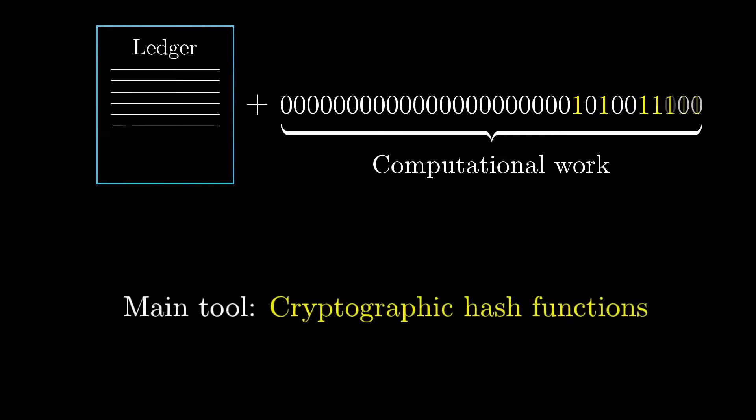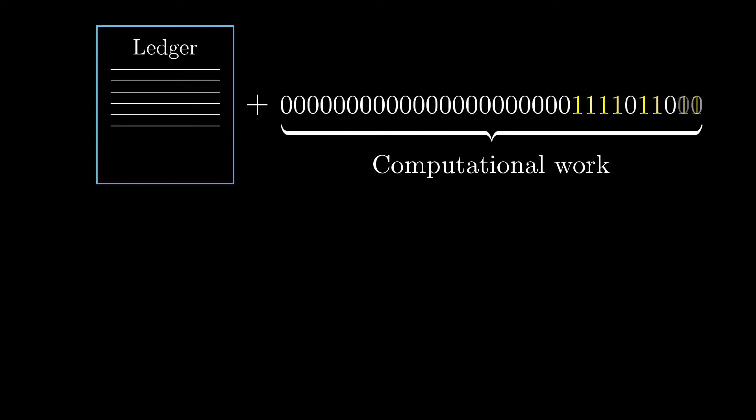The general idea that we'll build to is that if you use computational work as a basis for what to trust, you can make it so that fraudulent transactions and conflicting ledgers would require an infeasible amount of computation to bring about.